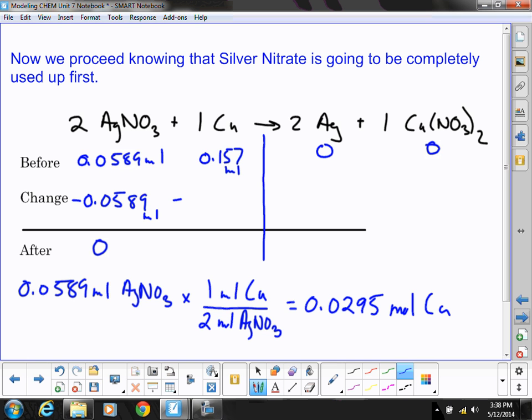So if I put that number in here, 0.157 minus 0.0295 and I have 0.128 moles of Cu left over. Notice that that value for Cu is positive. I had 0.157 moles of Cu. I only used 0.0295 and so I have 0.128 moles left.